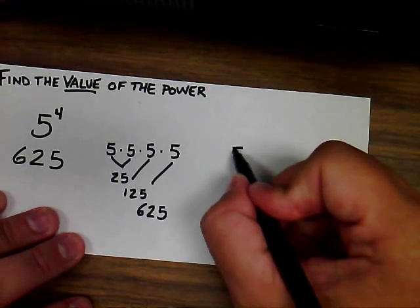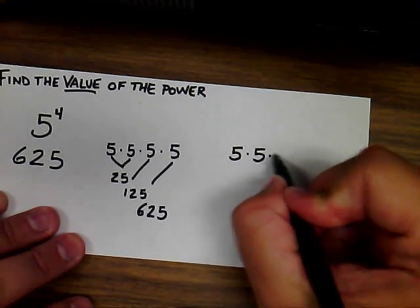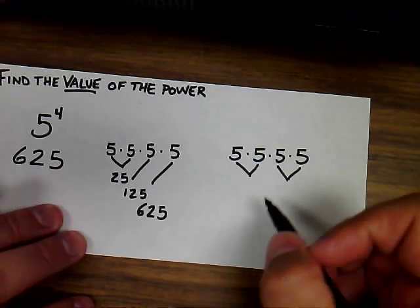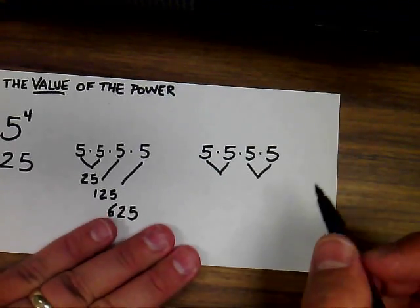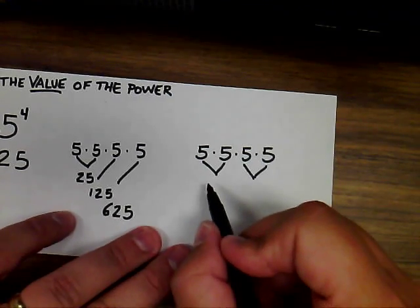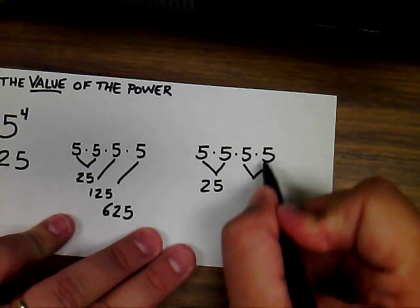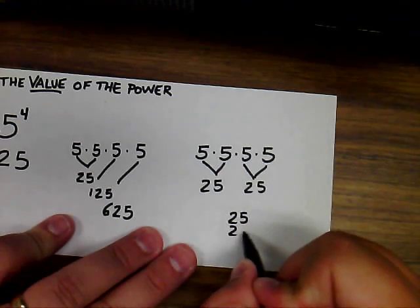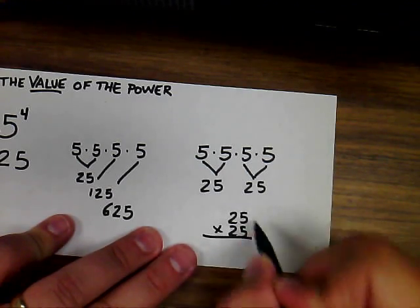Another way to do the same value, again writing it in expanded form, is you can use the associative property, which says you can group the factors in any way you'd like. So 5 times 5 is 25, and 5 times 5 is 25, and then multiply those terms, 25 times 25, to get your answer.